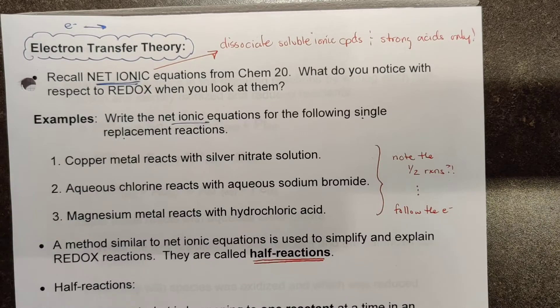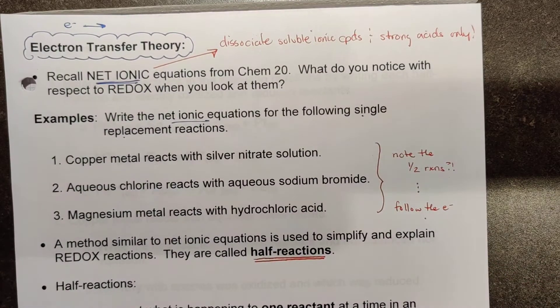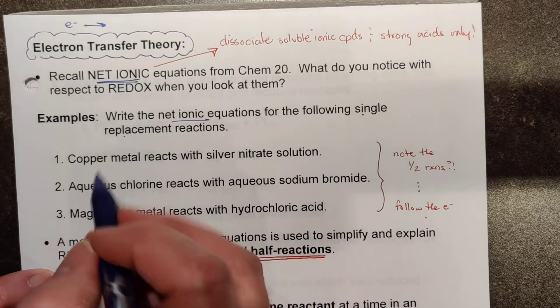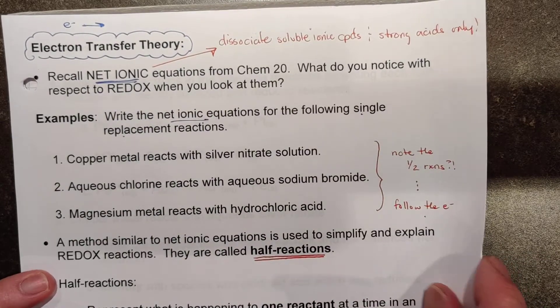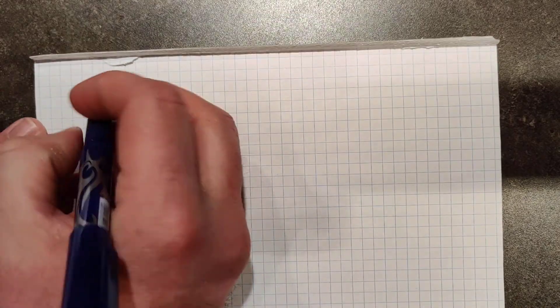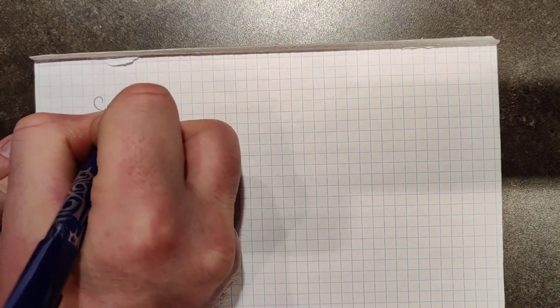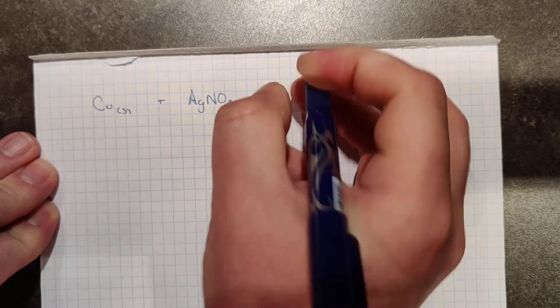But if we take some time to investigate them here, what we'll find is that we can follow the electrons quite easily through this and identify the processes of oxidation and reduction without even really having studied them yet. So let's take a look at this first one here. Copper metal reacts with a silver nitrate solution. So we go over here to a blank sheet of paper and we have copper metal reacting with silver nitrate, which is AgNO3, and we said it was a solution.